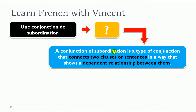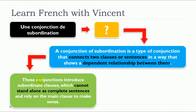A conjunction of subordination is a type of conjunction that connects two clauses or sentences in a way that shows a dependent relationship between them. This concept of dependent relationship is really important. These conjunctions introduce subordinate clauses which cannot stand alone as complete sentences, and they rely on the main clause to make sense.